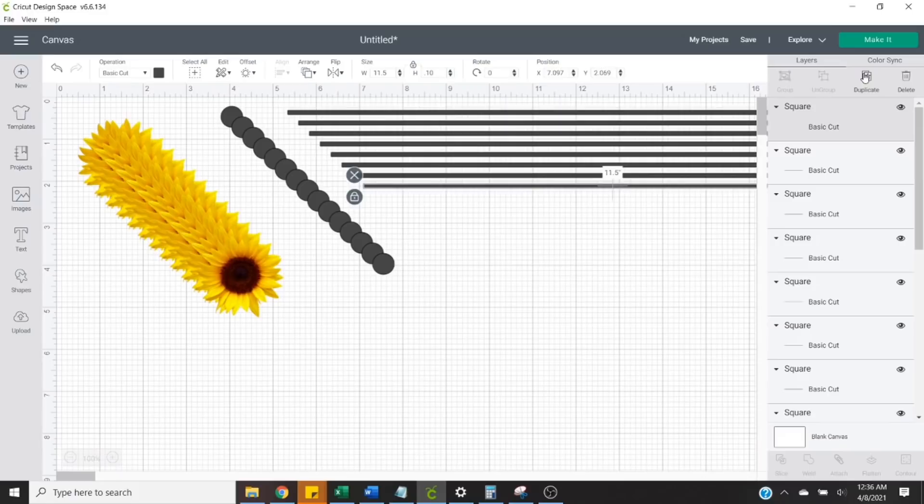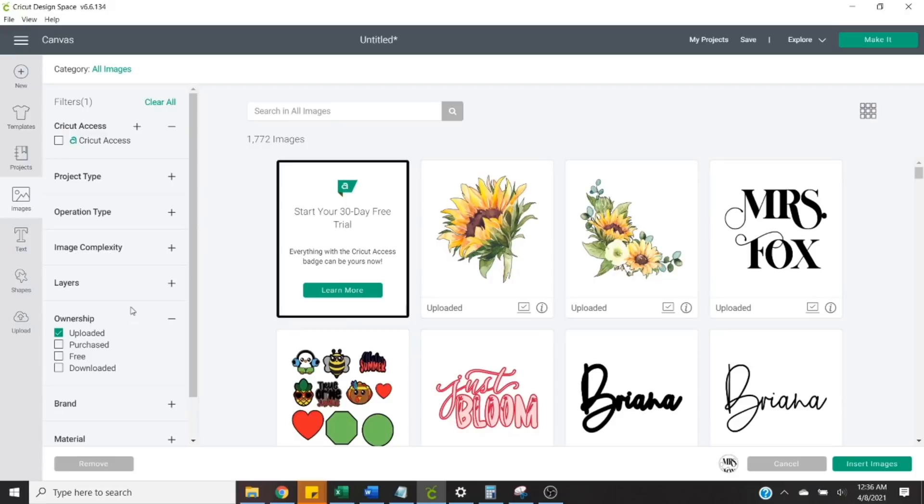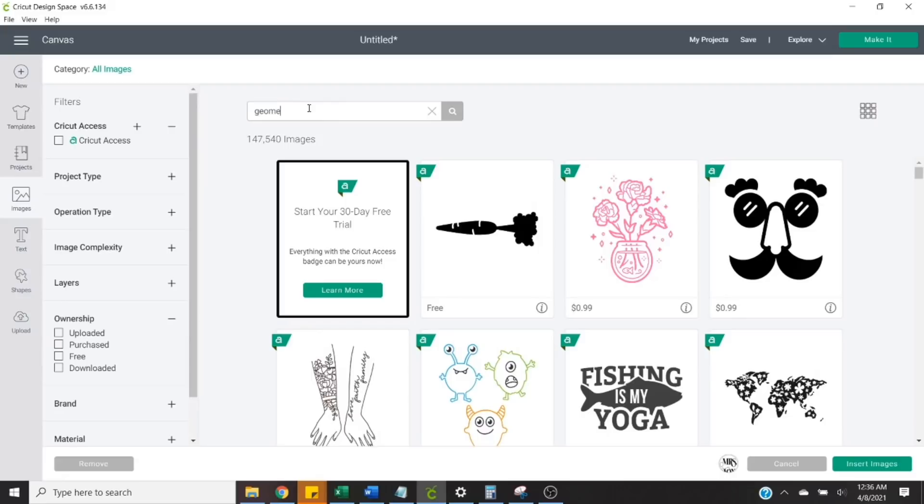For the name decal, I'm going to add the little name that we just created and uploaded from the Over app onto our canvas here. Then I'm also going to look up Geometric Shapes 7, which is from Cricut Design Space.